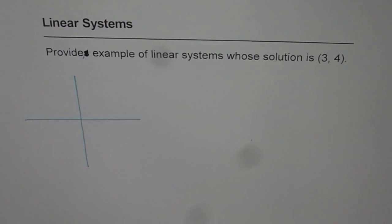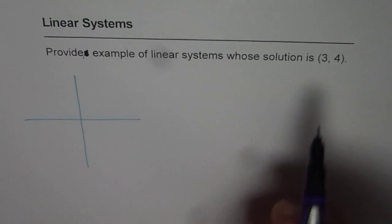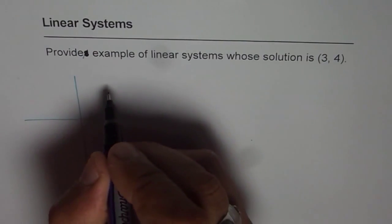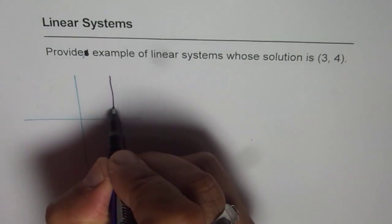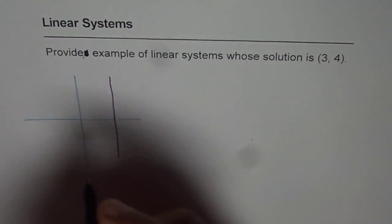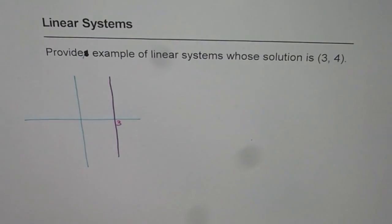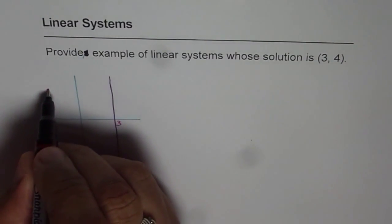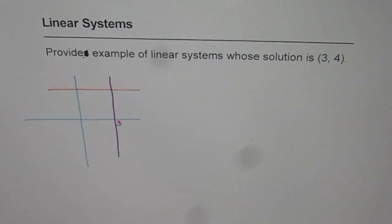And the best and the easiest solution for this is, 3 is the x value. So if I draw a vertical line going through 3, that is the x value, let's say this is my 3, x equals to 3. And another line, which is y equals to 4, let's say a line like this. In that case,